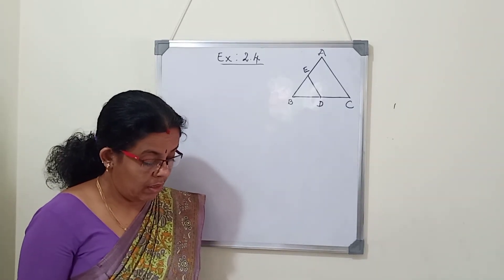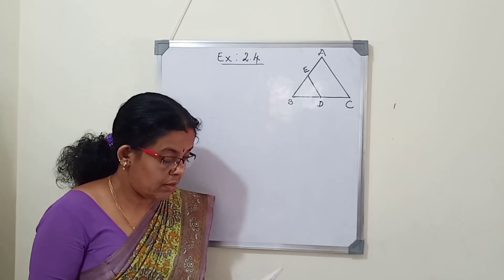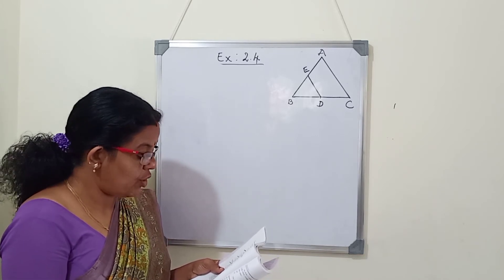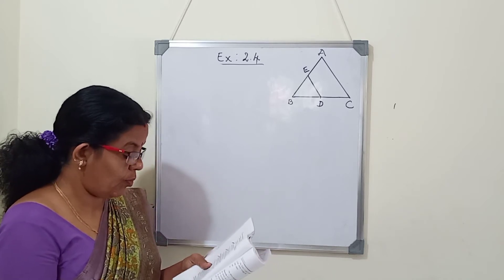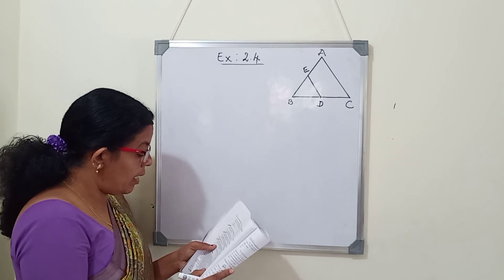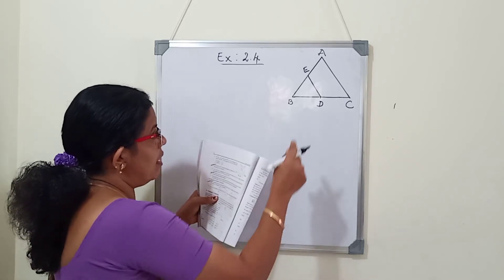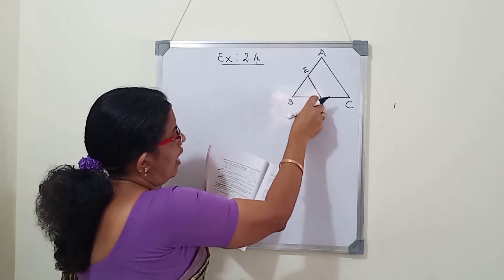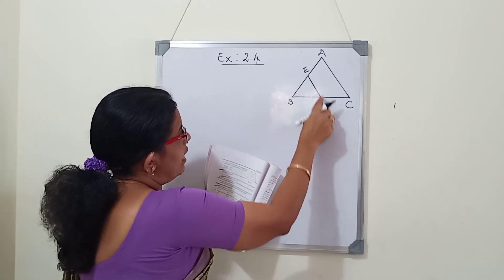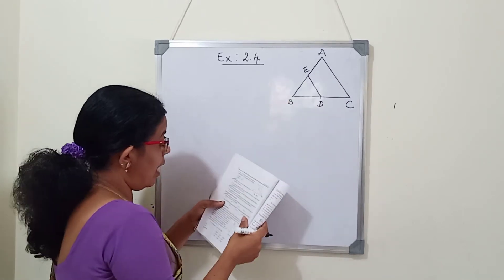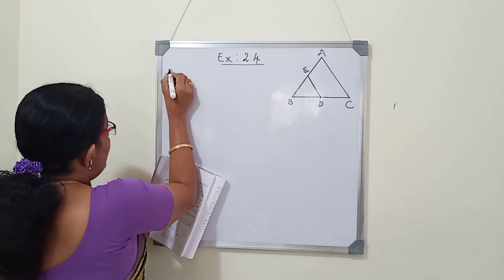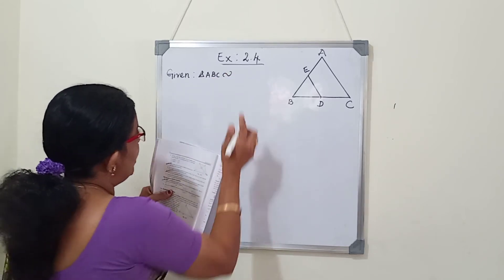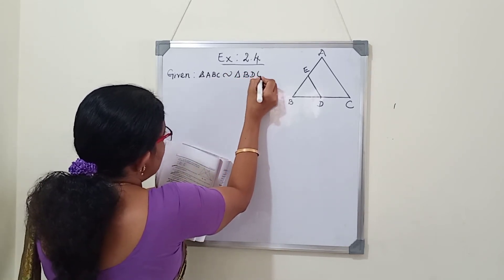Next question, number 8. Tick the correct answer and justify. Triangles ABC and BDE are two equilateral triangles such that D is the midpoint of BC. Find the ratio of the areas of triangle ABC and BDE. Both are equilateral triangles, so triangle ABC is similar to triangle BDE.